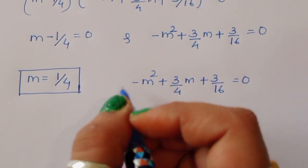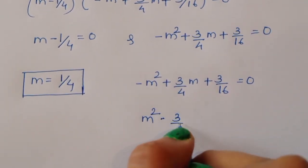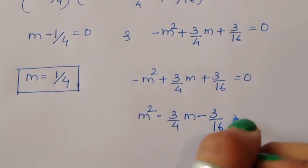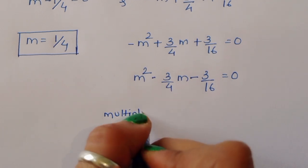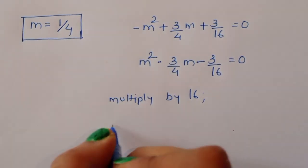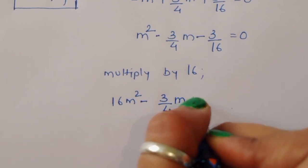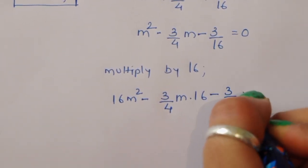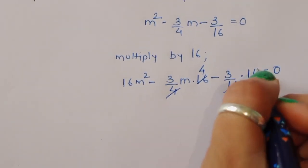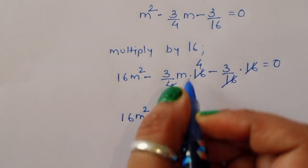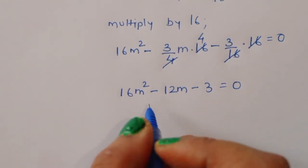For the second equation, multiplying by minus 1 gives m squared minus 3 upon 4 m minus 3 upon 16 equals 0. Now multiplying both sides by 16, we get 16m squared minus 12m minus 3 equals 0.